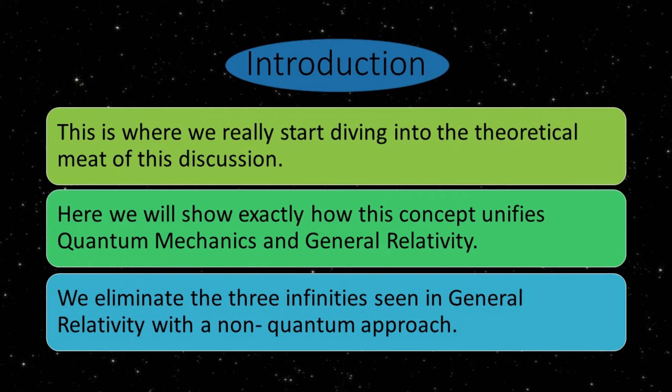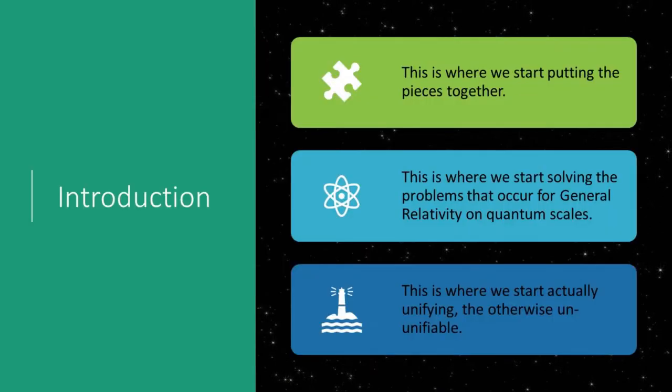This is where we really start diving into the theoretical meat of this discussion. Here we show exactly how this concept unifies quantum mechanics and general relativity. We eliminate the three infinities seen in general relativity with a non-quantum approach. This is where we start putting the pieces together, solving the problems that occur for general relativity on quantum scales. This is where we start actually unifying the otherwise ununifiable.